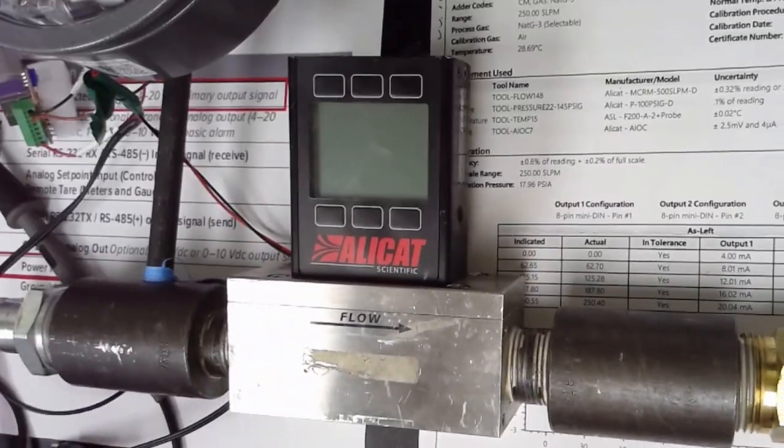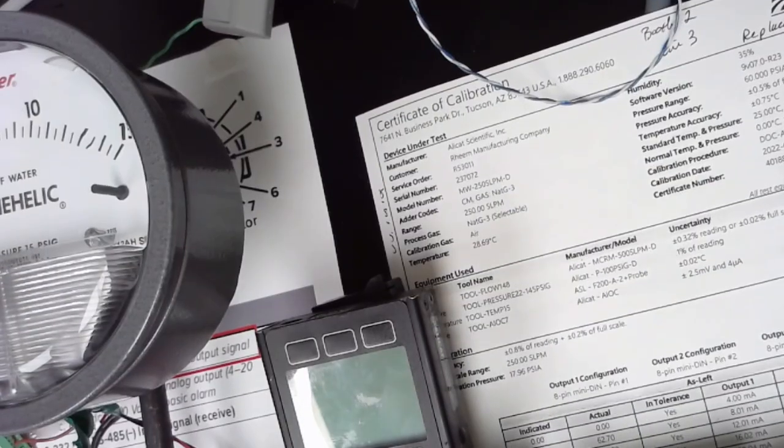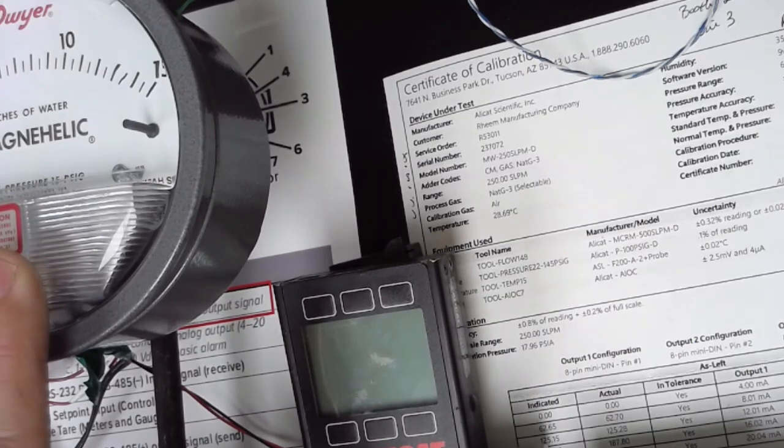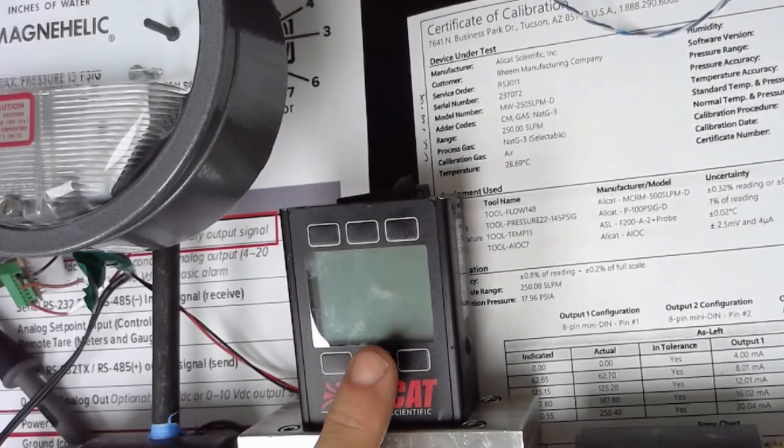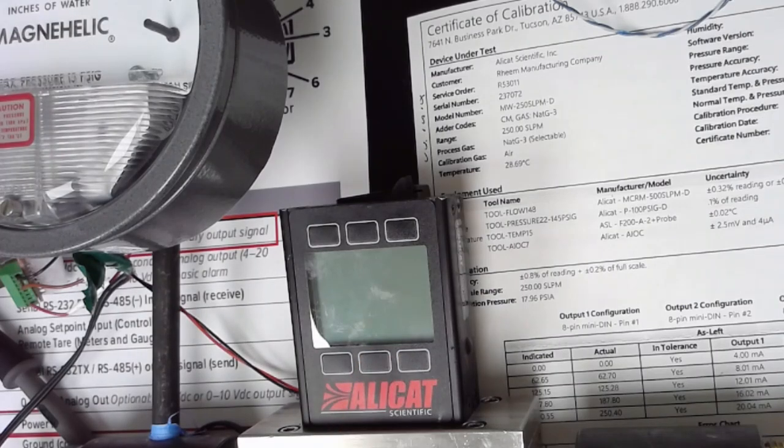It's installed on a quick connect that goes into the unit. This is a battery operated unit with the magna helix gauge. We can verify the magna helix pressure available to the unit is correct and we can actually read the flow. If the flow rate on this Alley Cat is over 10% different than the screen display, which comes from another Alley Cat, then we have an issue.